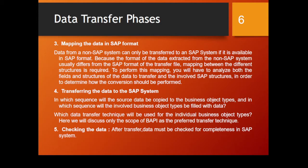To perform this mapping, you have to analyze both the fields and structure of the data to transfer and the involved SAP structures, to determine how the conversion should be performed. For example, if we want to upload customer data, we will need fields like customer name, customer code, address, and contact information in the same format SAP requires. We explore the customer master data table KNA1, find the relevant fields, and prepare our file accordingly. If a customer code has a length of 10 digits but our legacy system uses 5 digits, we add zeros before our legacy customer ID.